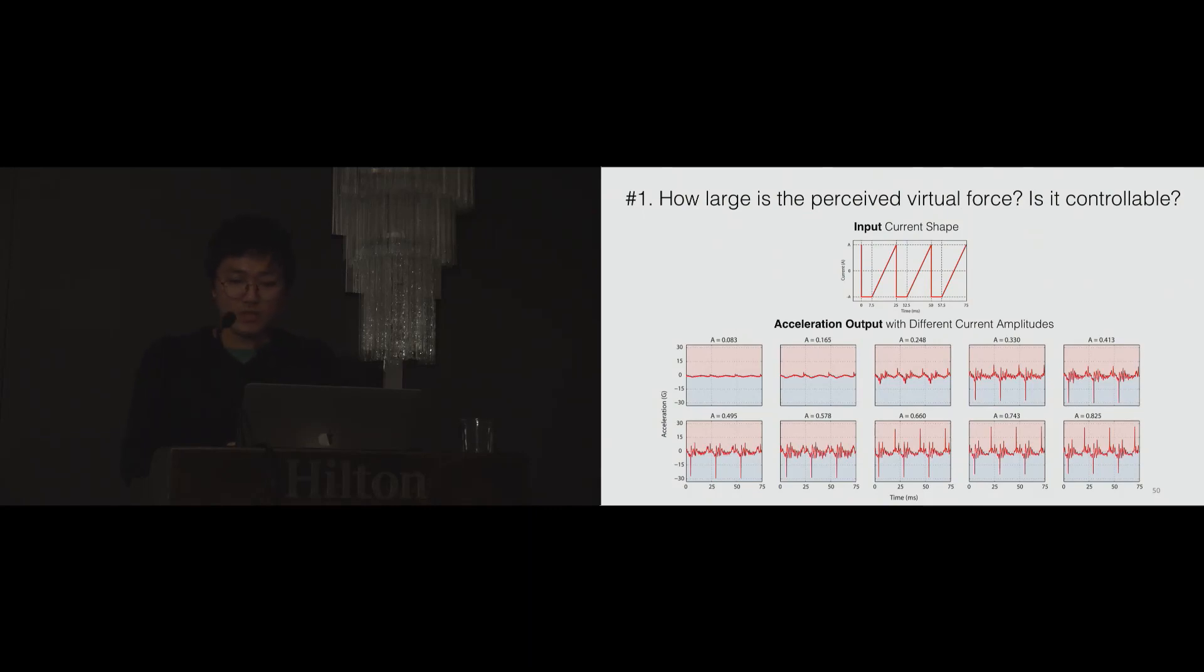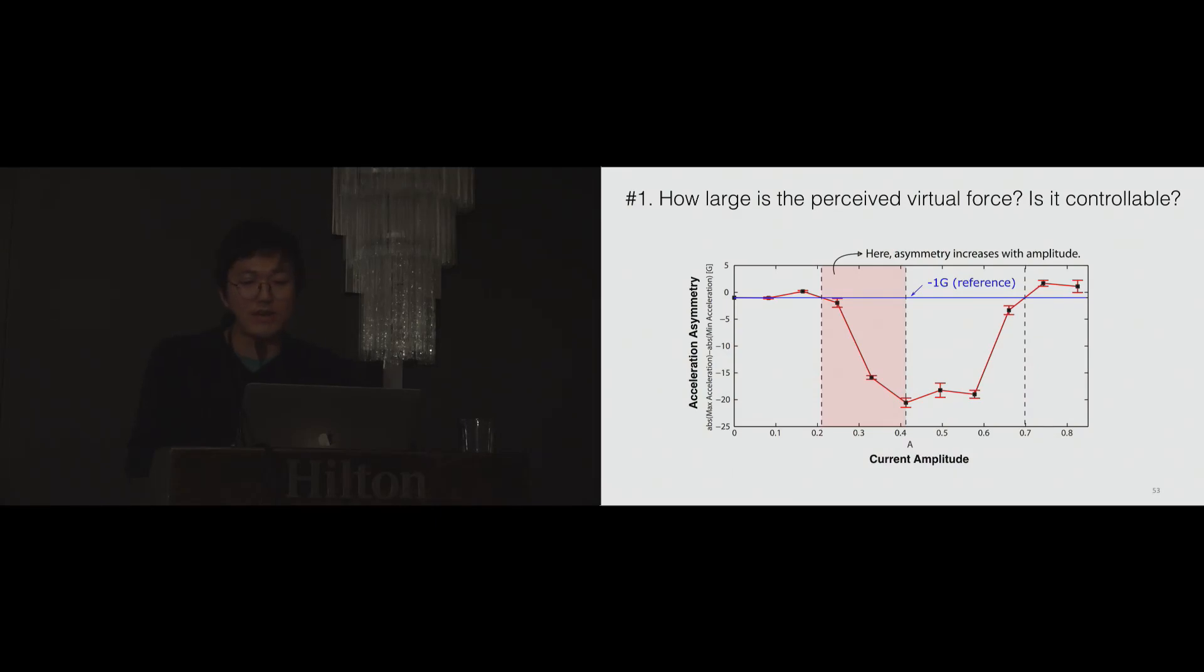To answer the first question, we measured the asymmetric vibration first. We measured accelerations using an accelerometer mounted to the device to see the asymmetry of vibrations. The top figures show the input signal and the bottom figures show the acceleration output with different current amplitudes. The five figures in the top row, we see that the magnitude of negative acceleration keeps increasing while the positive acceleration looks the same. From the five figures below, we see that the negative acceleration doesn't change anymore, and the magnitude of positive acceleration keeps increasing.